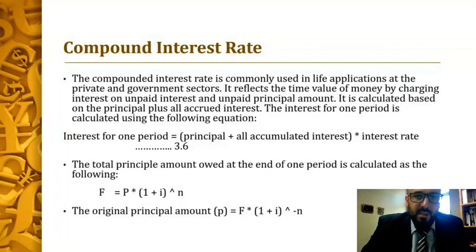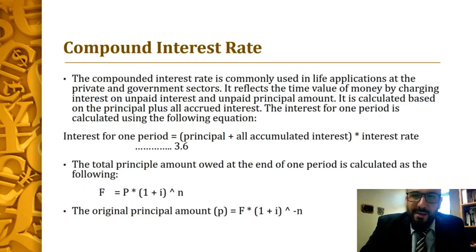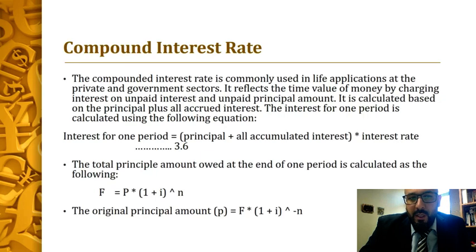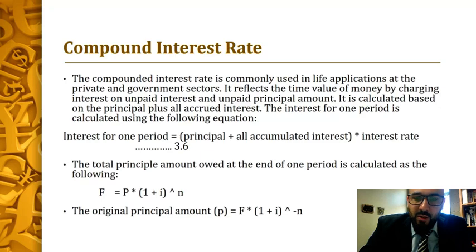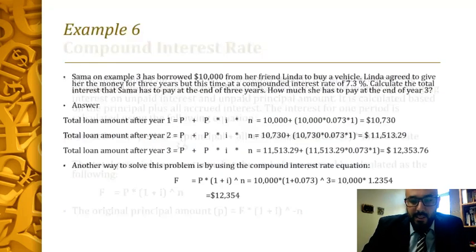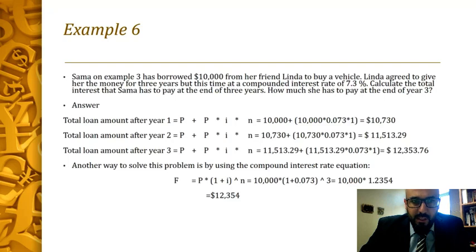Moving on to the compound interest rate — this is the most common type. The compound interest rate considers the time value of money, and there are charges on top of unpaid interest and unpaid principal. To summarize: interest over interest. The future value equation is F equal to P times one plus i to the power of n. To find the original principal: P equals F times one plus i to the power of negative n.